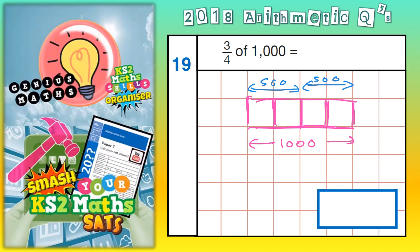But if two of the squares are worth five hundred, you need to split those in half again to get a quarter.